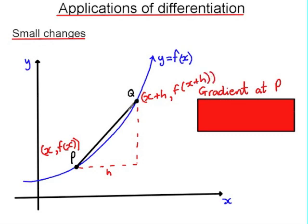Now if I want to know the gradient of the curve at a point, at the point p, if I imagine that q now is very close to p, so close that h tends to zero, then the gradient of this line segment will be equal to the gradient of the curve at the point p.